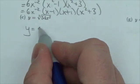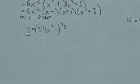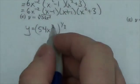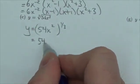This is going to be 54x² to the 1/3. And in fact, what I'm going to do here is take that 1/3 and distribute it to both of those factors in there. So we'll make this 54 to the 1/3 and then x to the 2/3.